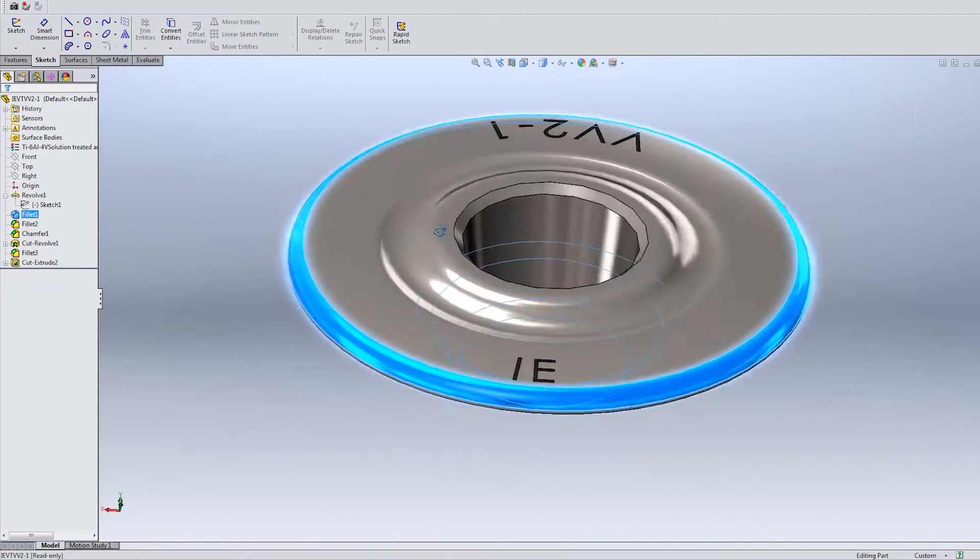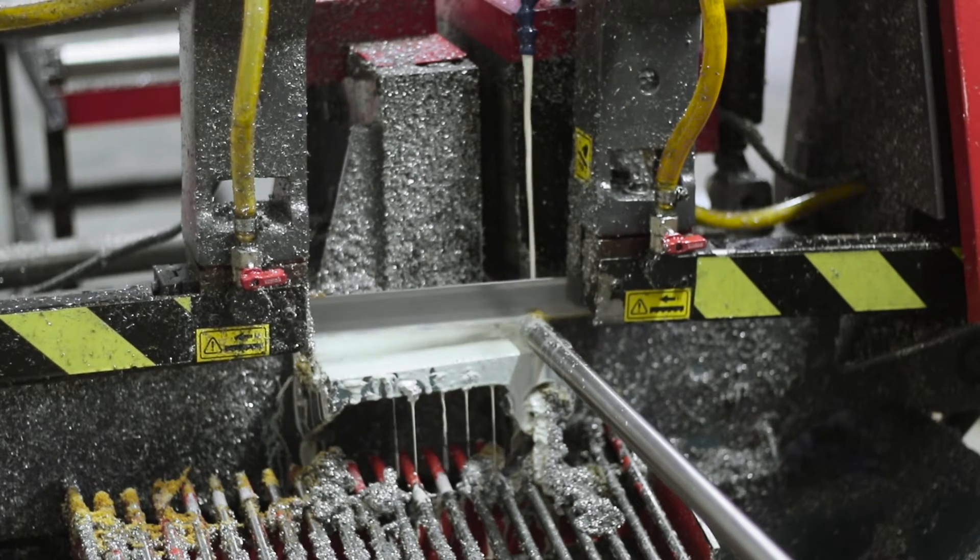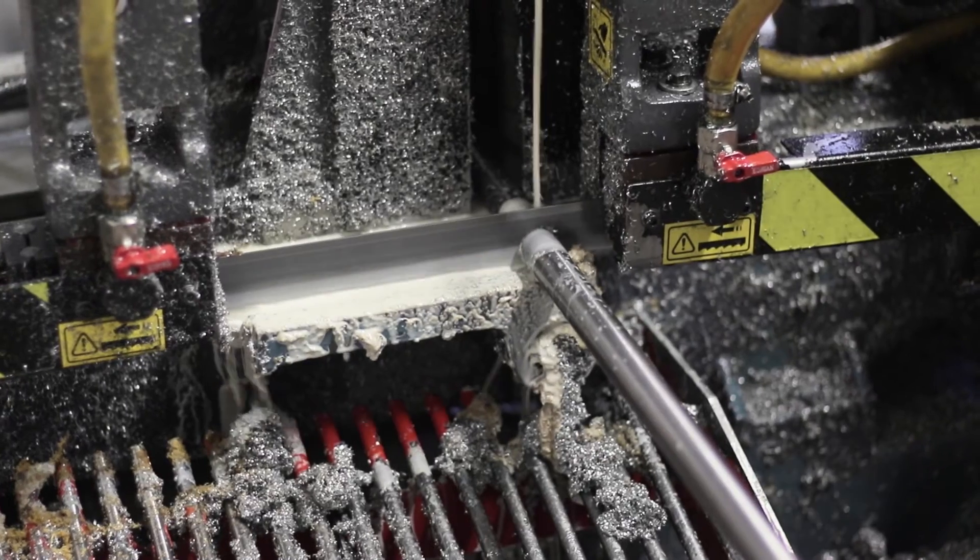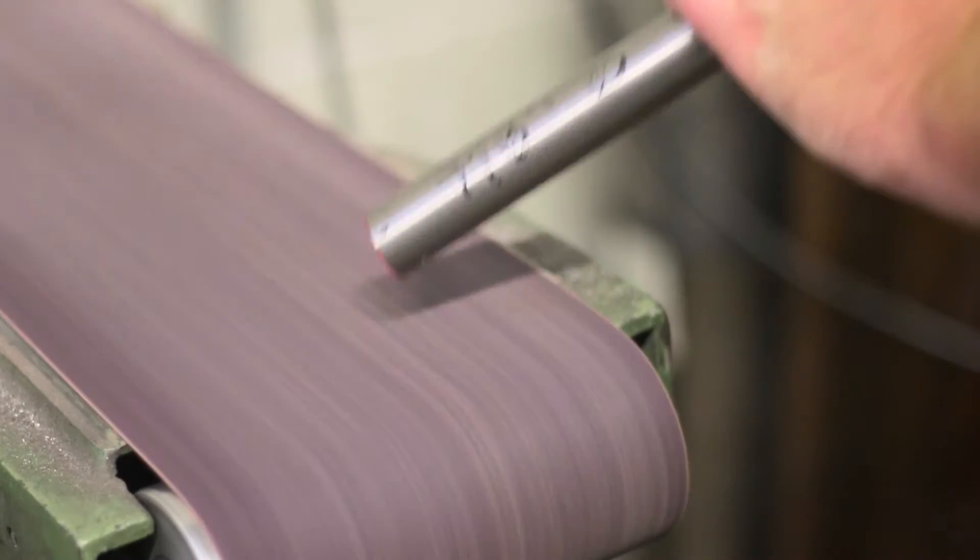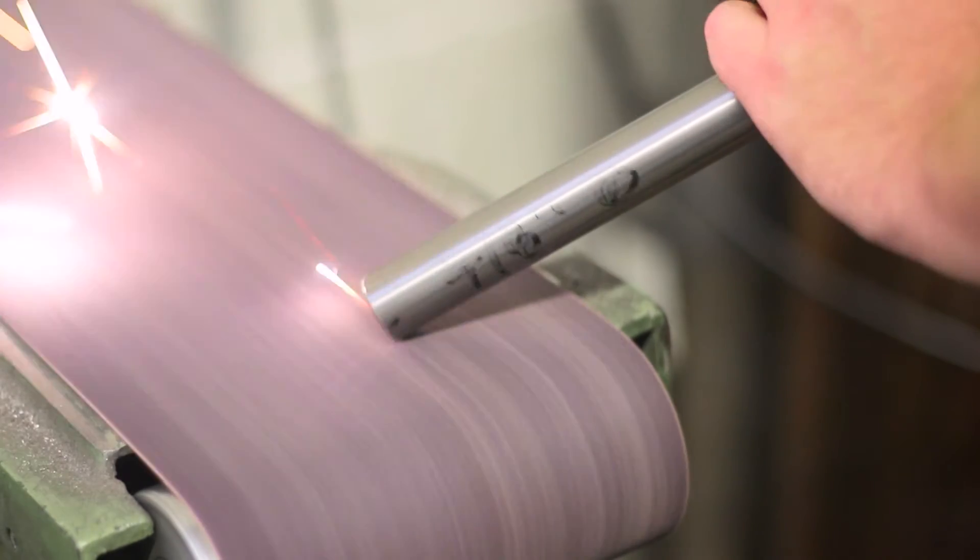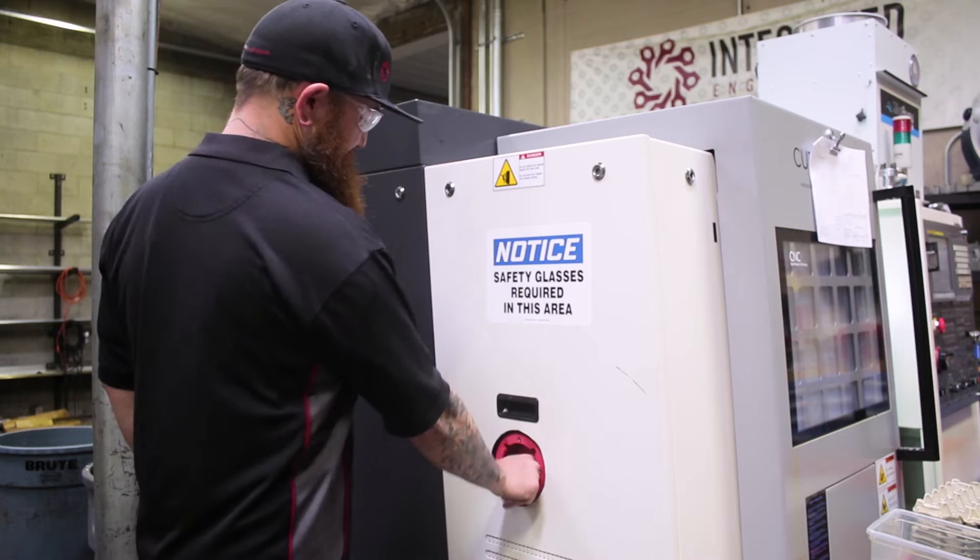Once designed, a special titanium alloy is sourced to manufacture the retainers. The titanium is delivered in bar stock and then cut down to size with a CNC saw. Once cut, the titanium bar edges are deburred and then loaded into one of IE's in-house CNC lathes.